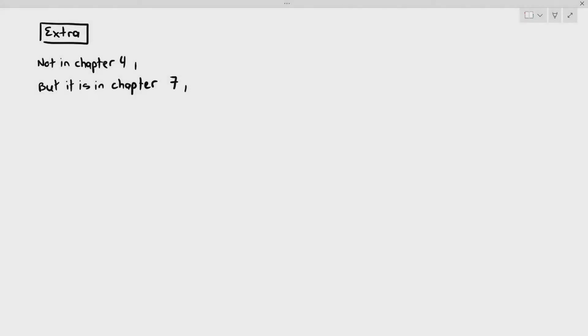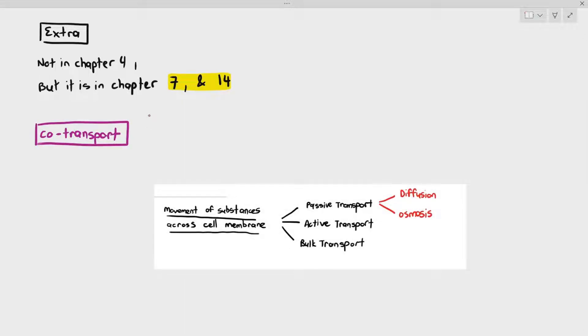Okay, in this video, we have to cover a concept known as co-transport. If you notice, in this particular diagram, I did put the word passive transport, which is diffusion osmosis, active transport, bulk transport. In no space did I mention anything about co-transport at all.